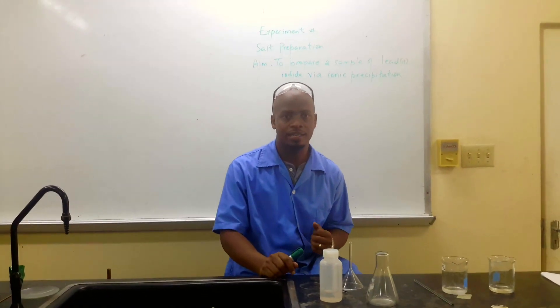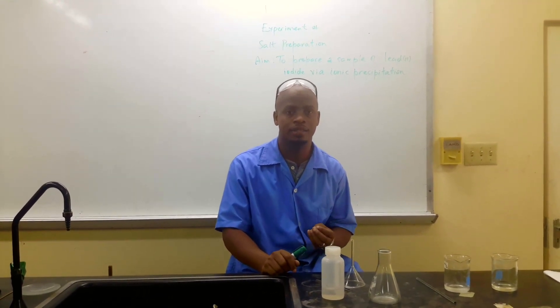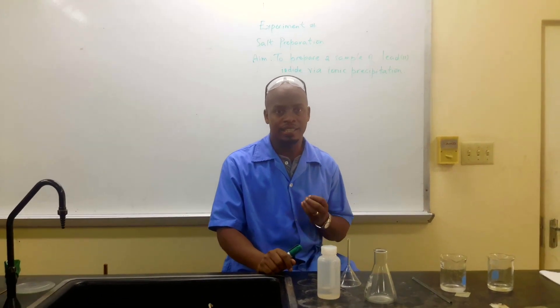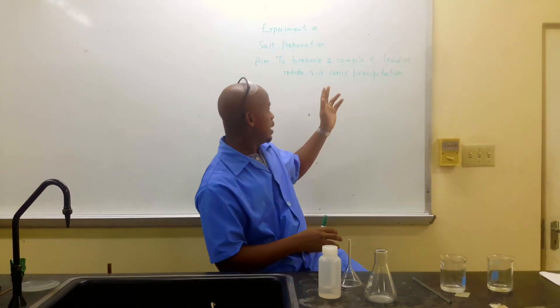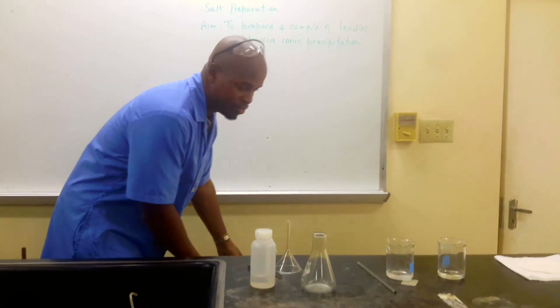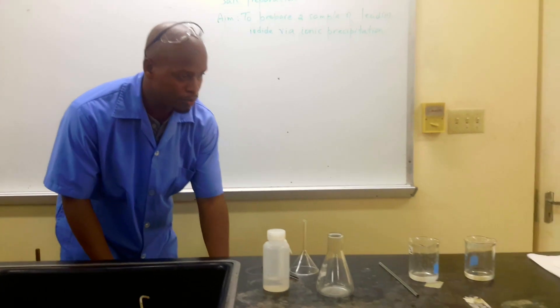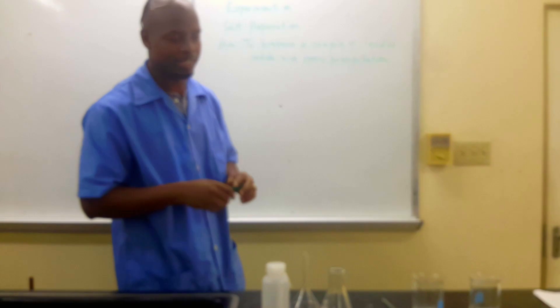So whenever we're going to prepare a salt, the first thing we should ask ourselves is if this salt is insoluble. Now, if the salt is insoluble, then we have to use the technique called ionic precipitation. To prepare a sample of lead iodide, we're using two soluble salts, as ionic precipitation dictates.